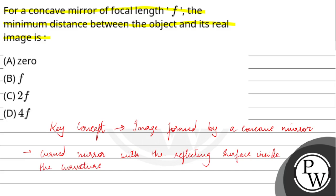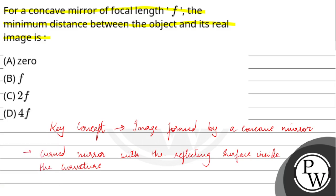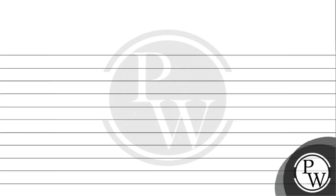So, question mein yeh pooch rahe ki agar minimum distance between object aur uska real image ko calculate karna hai, toh woh value kya hooga for a concave mirror. Is question ko answer karne ke liye pehle haam concave mirror ka ek diagram lenge. Let us say yeh hai curvature, aur yeh hoga woh hissah joh silver kar chuke hai — this is the reflecting surface.